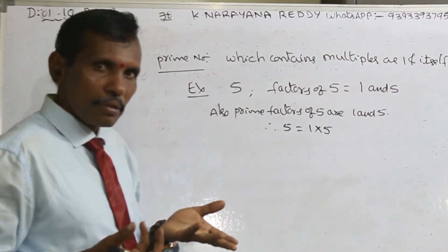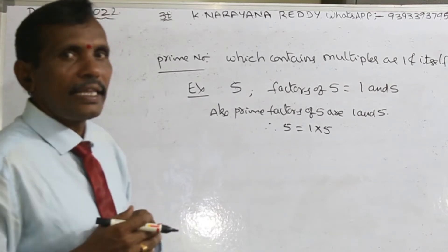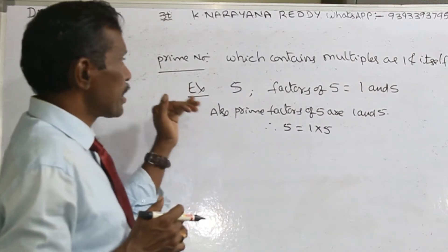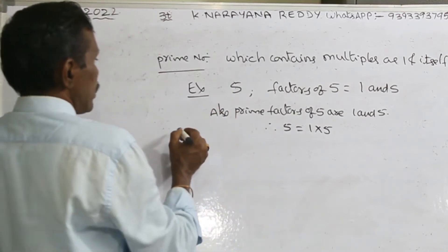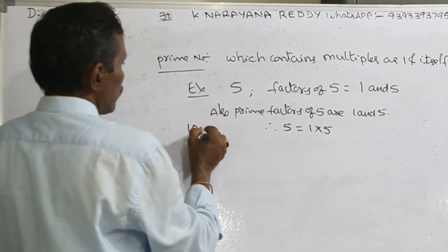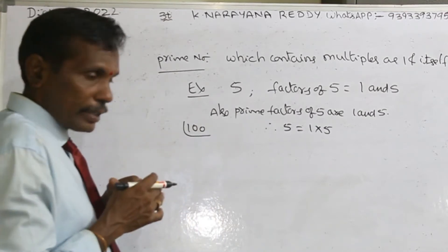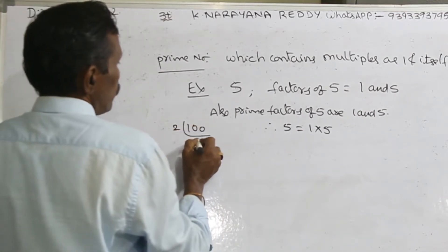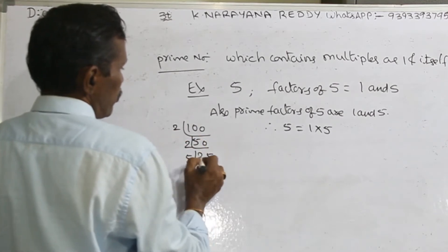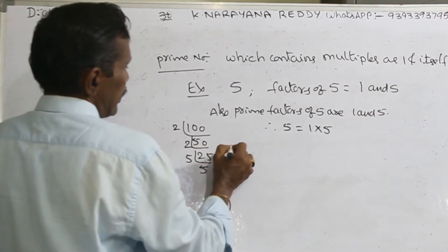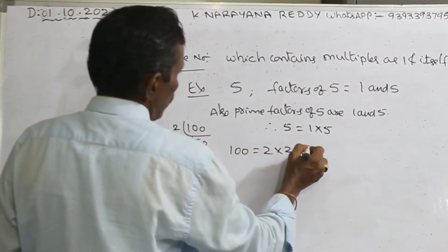This is called prime factorization for a whole number. But if you want to find the prime factors of some other number — for example, take 100 — how to find the prime factors? Using the factors method: 2 gives 50, 2 gives 25, 5 gives 5.